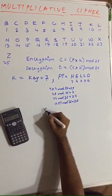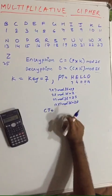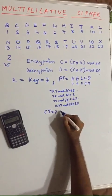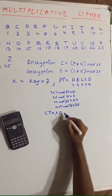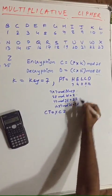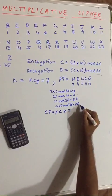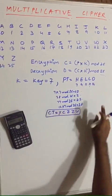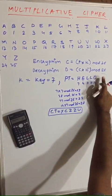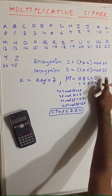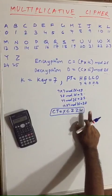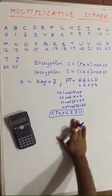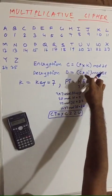Converting these values to letters: 23 is X, 2 is C, 25 is Z, 25 again is Z, and 20 is U. So for plaintext 'hello' using multiplicative cipher, the ciphertext is X C Z Z U. Now let us apply the decryption algorithm, which is C × K⁻¹ mod 26.